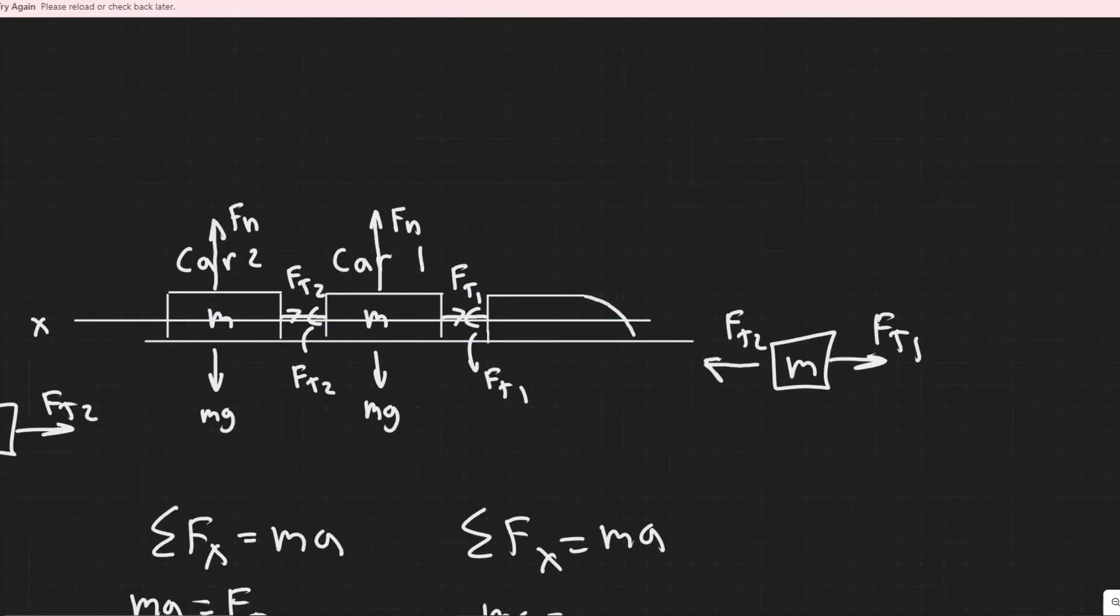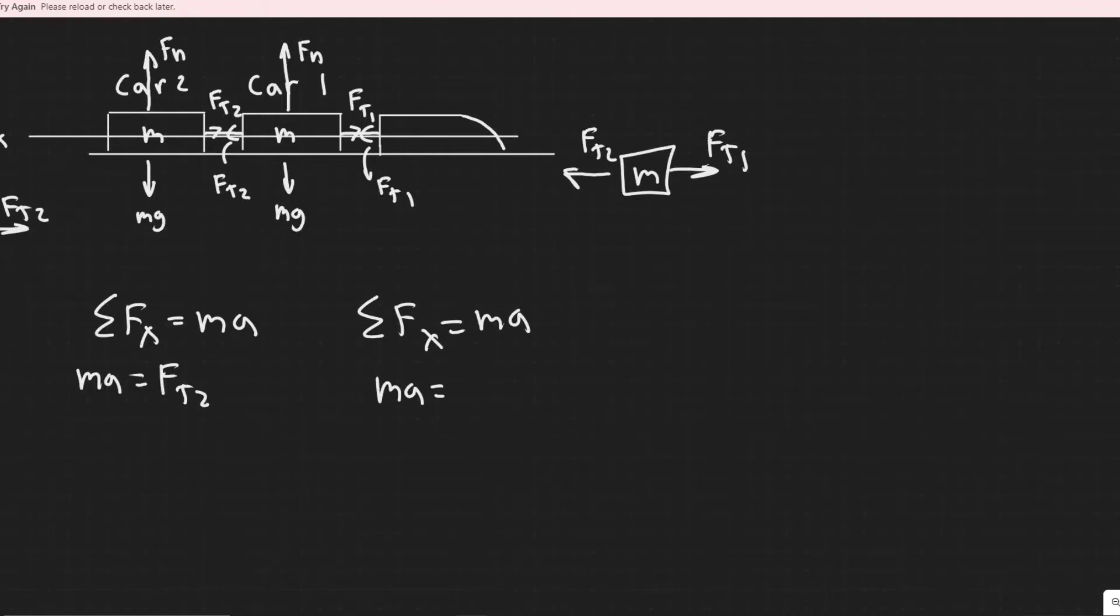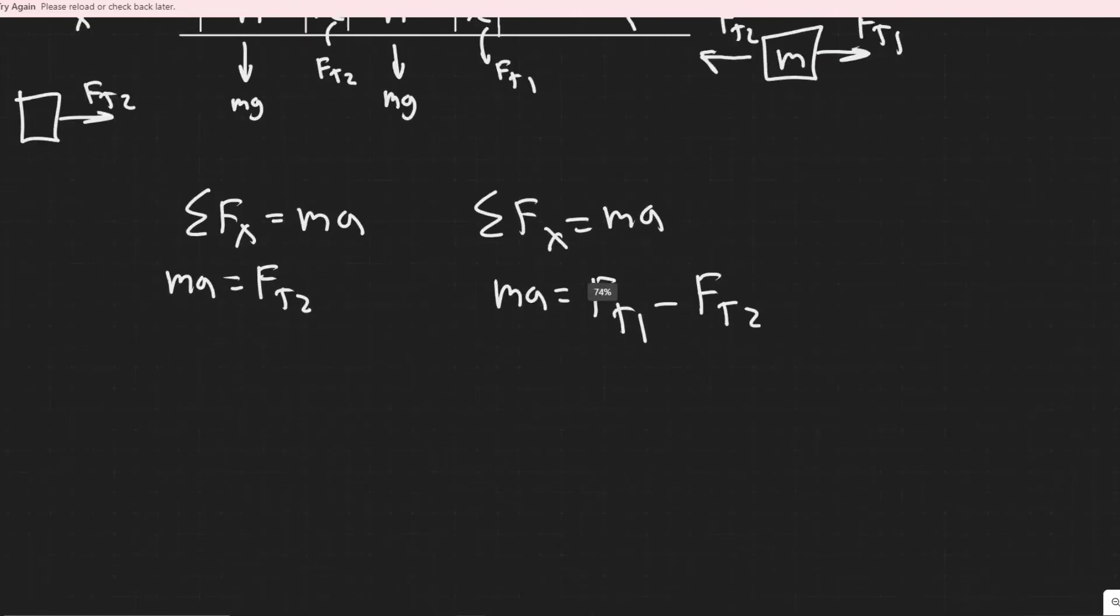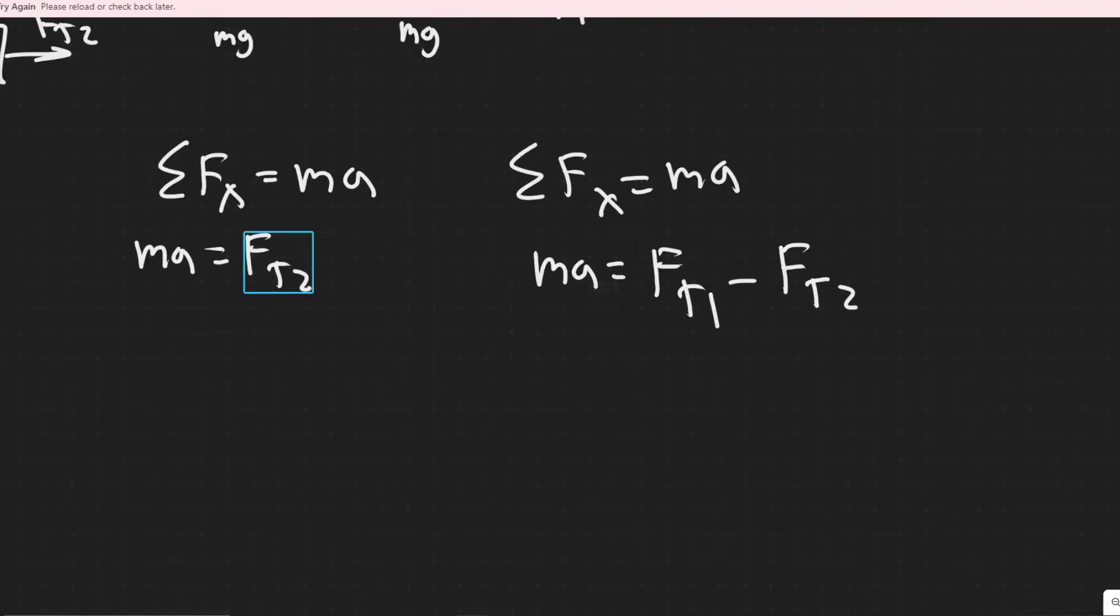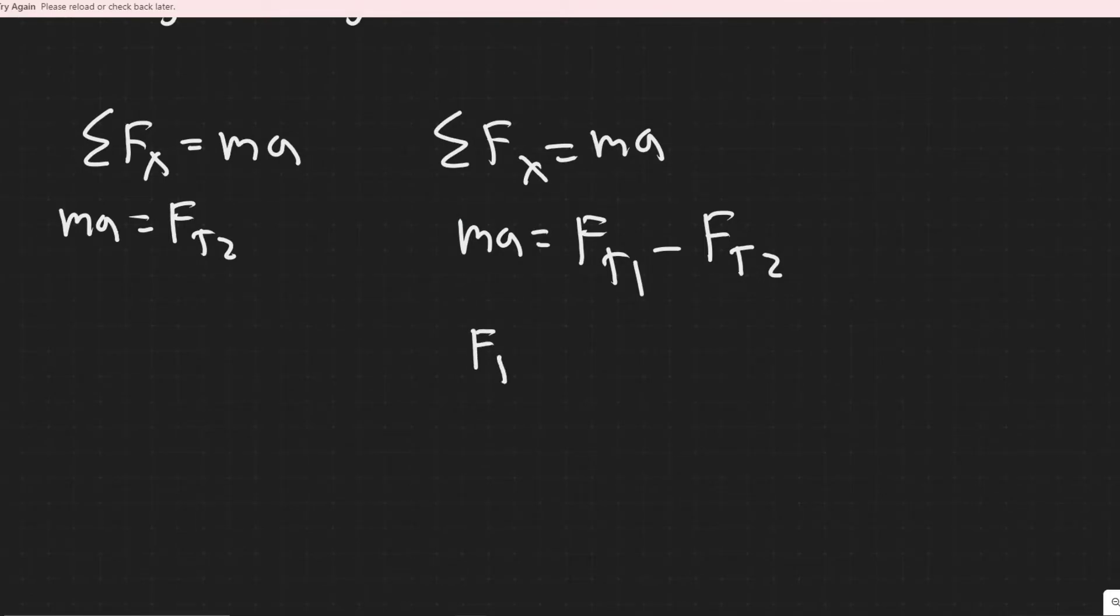Because this car is going to be pulling back on it. So MA equals, I'm going to choose the right to be positive. So you have Ft1 and then minus Ft2. So I'm just choosing right to be positive. So that's why it's positive, and then plus a negative value. That's why this is minus.